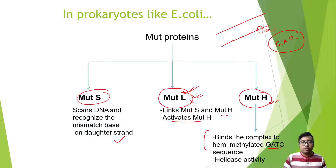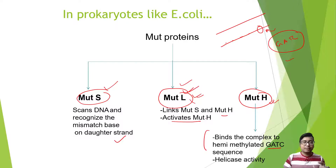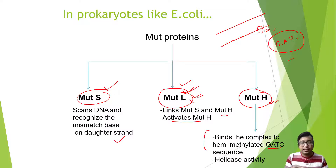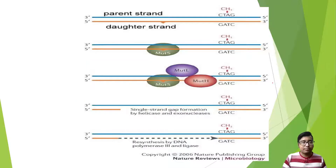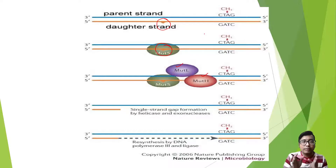MutH will cut at the GATC sequence. To summarize: identification is by MutS; MutL links MutS to MutH and activates MutH; and MutH actually cuts at the GATC sequence. So this is what happens — this is the area of error. MutS will come and identify, MutS will recruit MutL, MutL will activate MutH, and this portion will be cut.